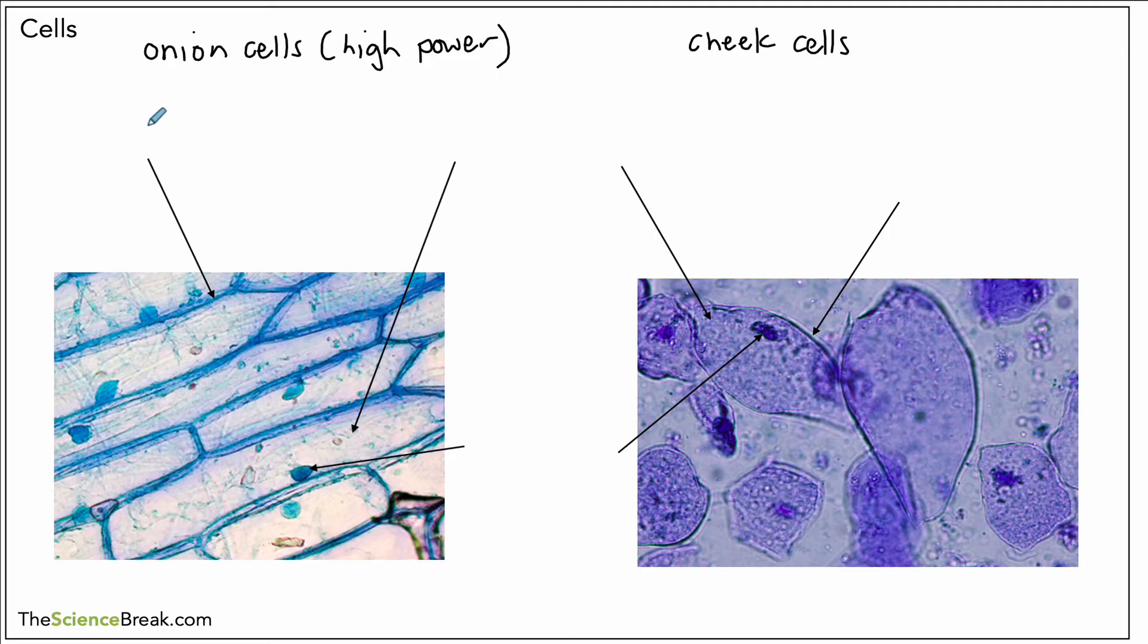We can label the parts over here on the onion cells. We have the cell wall on the outside, and because this is a plant cell we know we have a cell wall. So plants only have cell walls, and there's an onion cell being a plant.